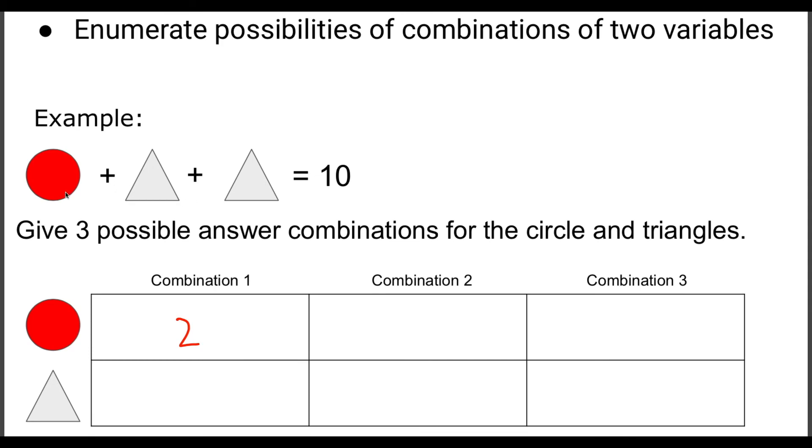What would the triangles be worth? Well, if that's two, we need eight more to make ten. So they've got to be the same. It will be four then. So two plus four makes six. Plus another four would make ten. So the triangle would be worth four.